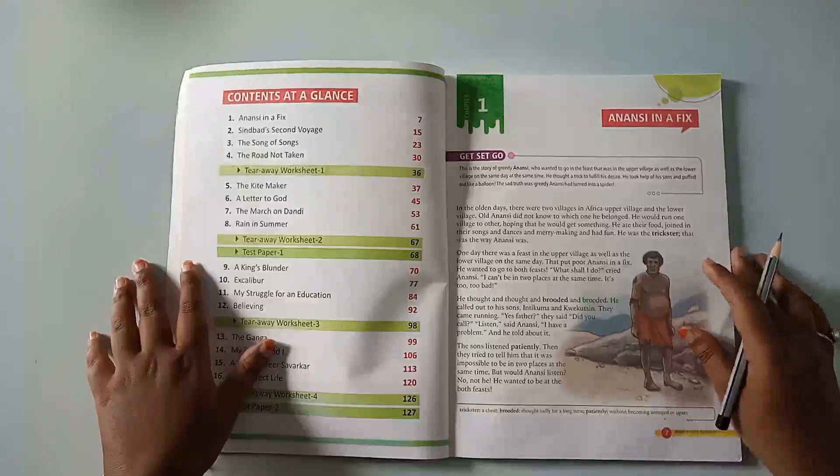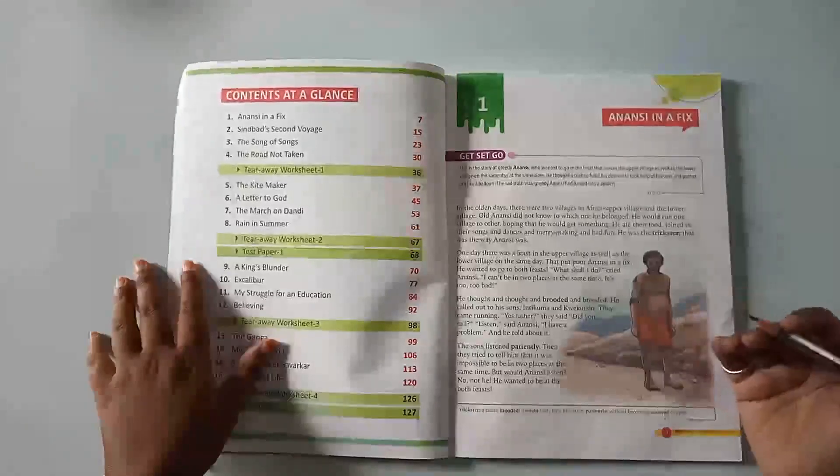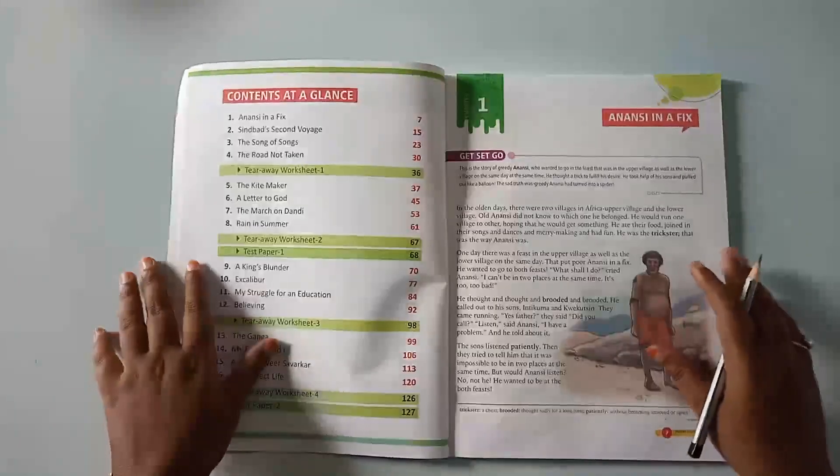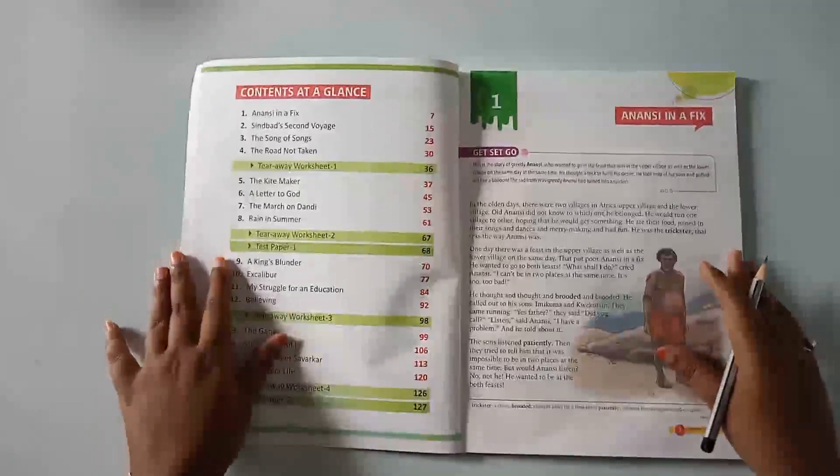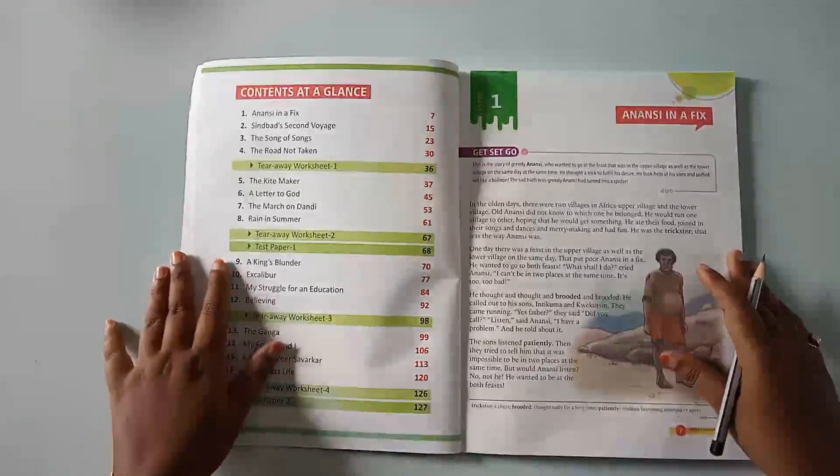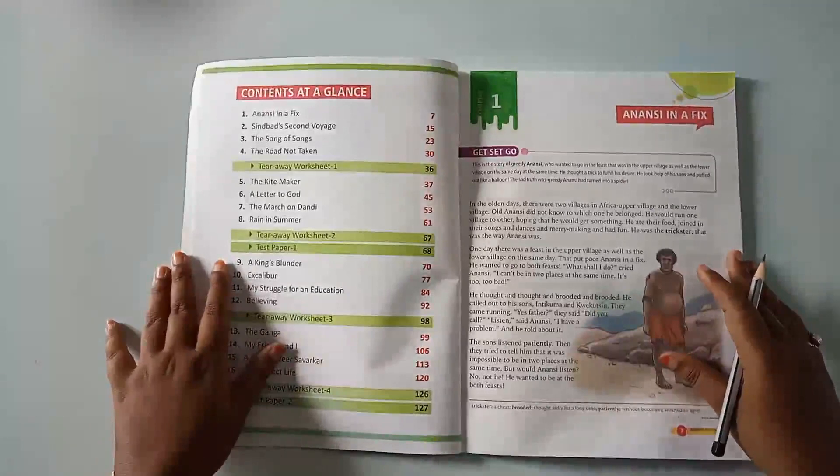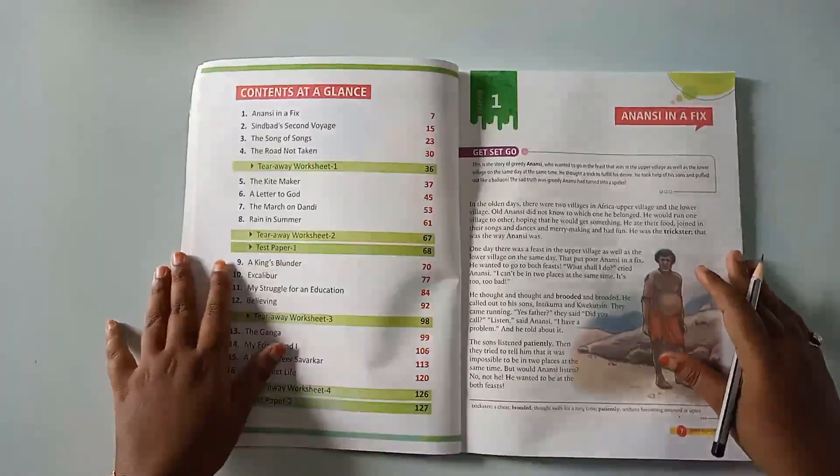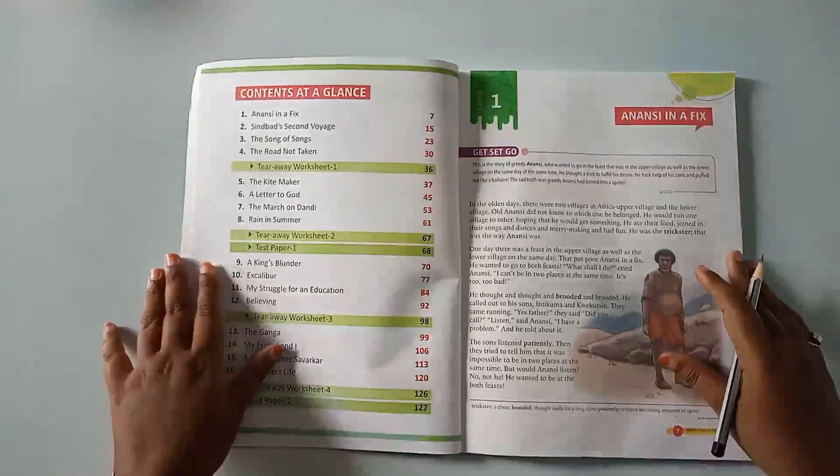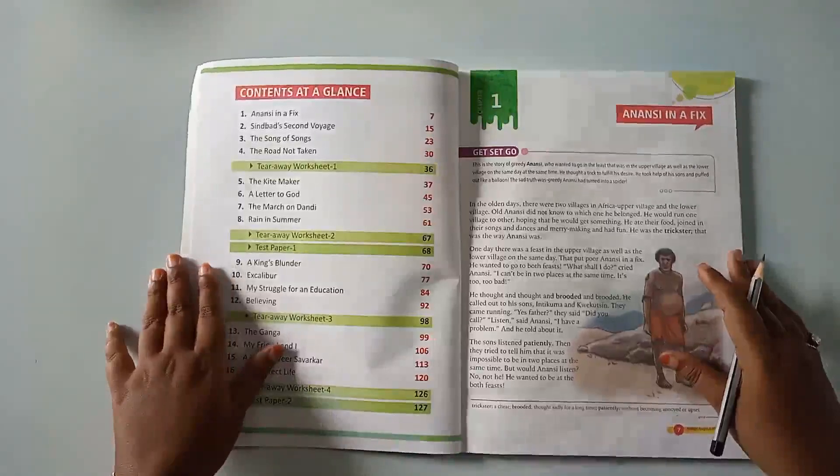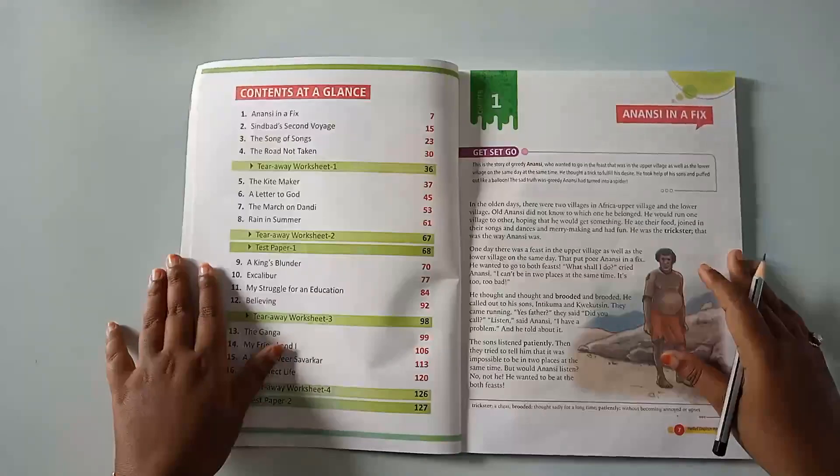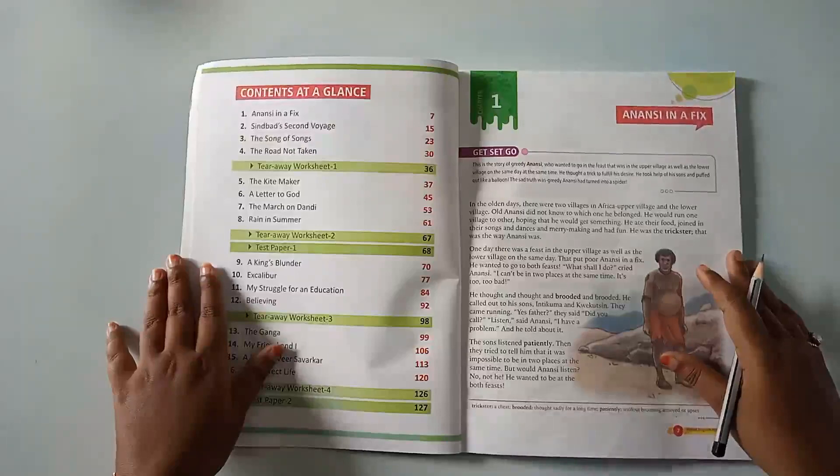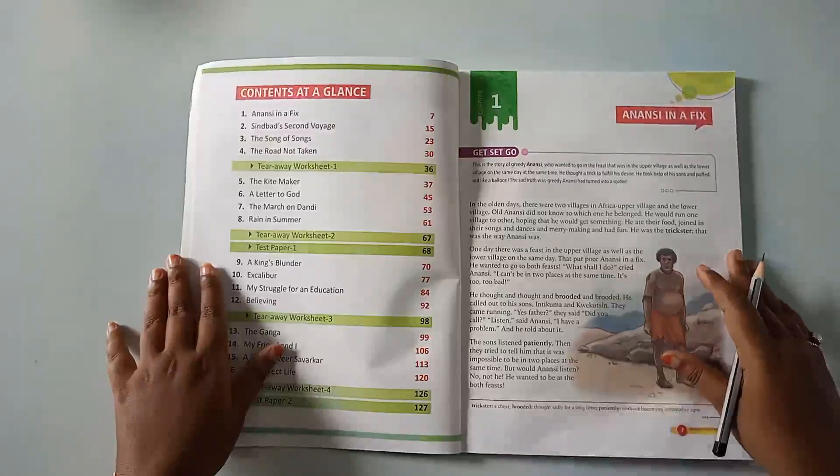And this story will tell you that how it happened or what happened with Anansi. Coming to the story. In the olden days, there were two villages in Africa, upper village and the lower village. Old Anansi did not know to which one he belonged. He would run one village to other, hoping that he would get something. He ate their food, joined in their songs and dances and merry-making and had fun. He was the trickster. That was the way Anansi was.